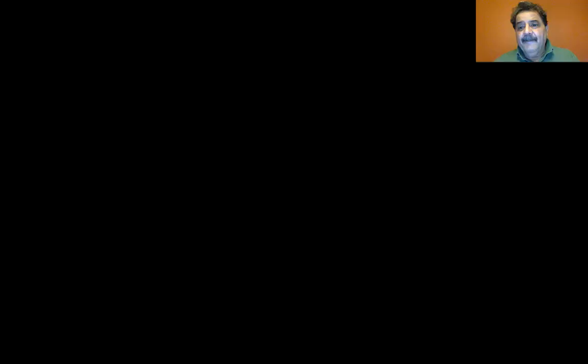Well, I'll show you why. These are Maxwell's equations. The integral form is in the center column and the differential form is in the right-hand column with a bunch of Dell operators. But this is basically Gauss's law, Gauss's law for magnetism, Maxwell-Faraday equation, and Ampere-Circuital law with Maxwell's additions.